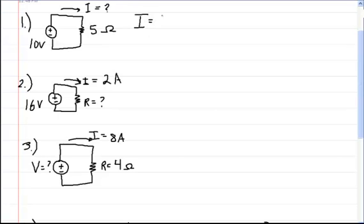In order to solve for current, you need to know that the current is equal to the voltage divided by the resistance. And then you just plug in the values, so the voltage is 10 volts divided by the 5 ohm resistor. So you have 2 amps going through that circuit.